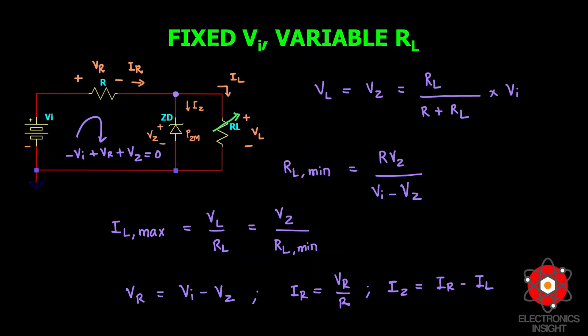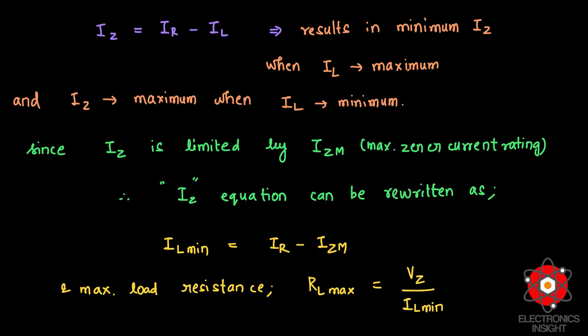Since IZ is limited by the IZM rating — the maximum current rating of the Zener diode specified in the datasheet — substituting IZM for IZ establishes the minimum IL and maximum load resistance. Therefore, IL_min equals IR minus IZM, and RL_max equals VZ divided by IL_min, since maximum RL corresponds to minimum IL.